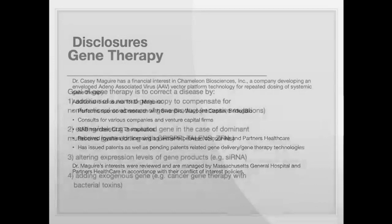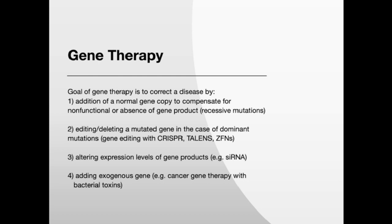For those of you who are new to gene therapy, I want to give a little intro to some basic concepts. The goal of gene therapy is to correct a disease by addition of a normal copy of a gene to compensate for a non-functional or absent gene product. This is typically used for recessive mutations. Second is editing or deleting a mutated gene in the case of a dominant mutation, using popular gene editing technologies such as CRISPR. You can also alter expression levels of gene products such as mRNA using siRNA or microRNA technology. Finally, you can add exogenous genes, for example for cancer gene therapy with a bacterial toxin to kill tumor cells.